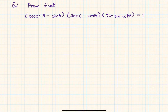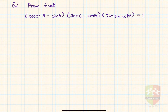Welcome to another session on trigonometric identity problem solving. In this problem, it is asked to prove that cosecant theta minus sine theta, times secant theta minus cos theta, times tan theta plus cot theta is equal to one.